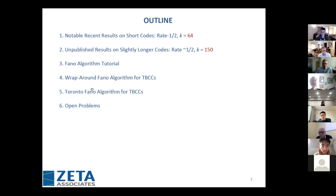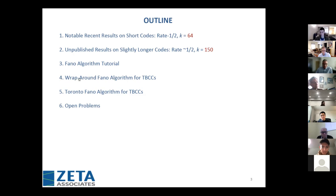As Rick mentioned, we'd like to get rid of that zero-termination overhead. So I want to focus on the Fano algorithm for tail-biting. There's a common-sense approach I came up with based on the wrap-around Viterbi algorithm, and also an algorithm I found in the literature published by Shisheng. Then I'll discuss some open problems.